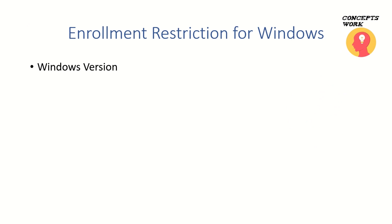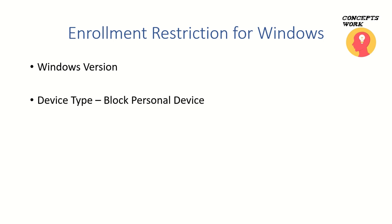The first setting is Windows version — I can have a policy in place where any device with a version less than 10.0 will not be enrolled in Intune. The next one is device type restriction, where users will not be able to enroll their personal devices.